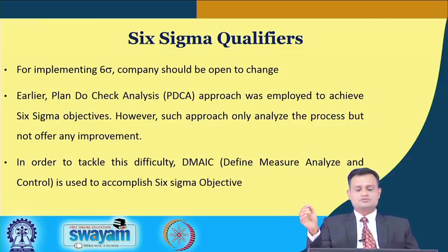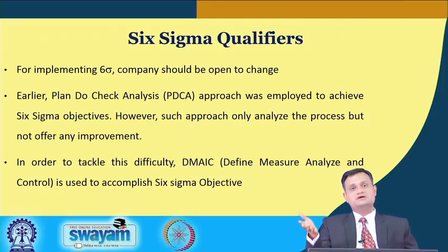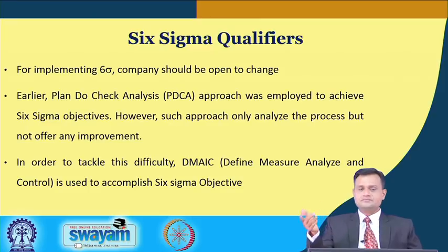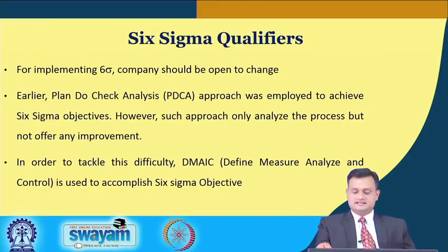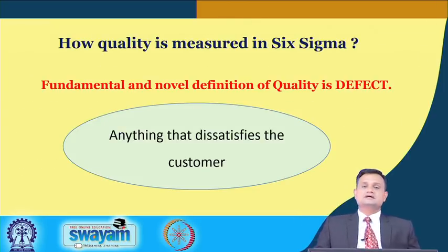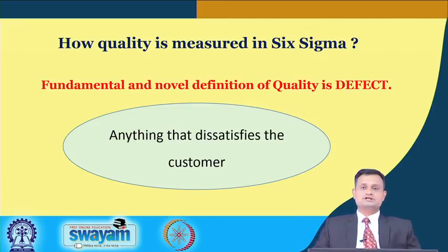Previously, the Plan-Do-Check-Analyze approach was used to achieve improvement in sigma level. But this was not very workable because it was not focusing much on the improvement part and more on analysis. Subsequently, the DMAIC approach was developed — Define, Measure, Analyze, Improve, and Control — and this is used as the central approach in achieving Six Sigma for a given process or function in the organization.